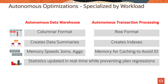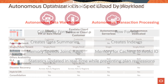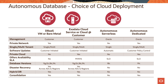Let's now look at the autonomous optimizations for autonomous data warehouse and autonomous transaction processing. Autonomous data warehouse stores data in columnar format and creates data summaries to speed up in-memory joins and aggregates, whereas autonomous transaction processing stores data in row format, where indexes are created automatically and memory is used for caching to avoid IO. In both services, statistics are updated in real-time while preventing plan regressions.